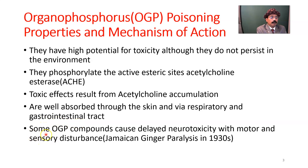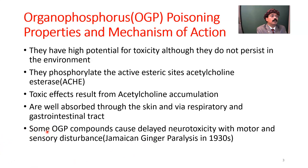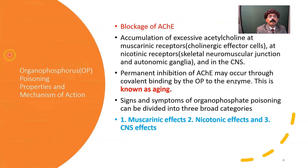Some organophosphate compounds cause delayed neurotoxicity with motor and sensory disturbances, as seen in Jamaican ginger paralysis during 1930. Some organophosphorus compounds may also be toxic when coming into contact with certain fruits like melon, which caused toxicity cases in California and New York. There will be blockage of acetylcholine esterase and accumulation of excessive acetylcholine.